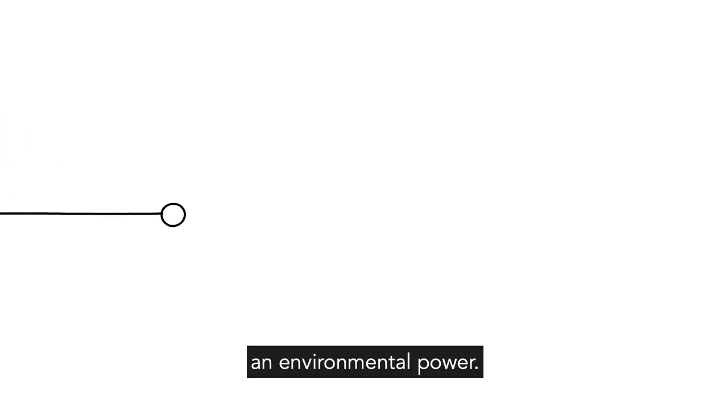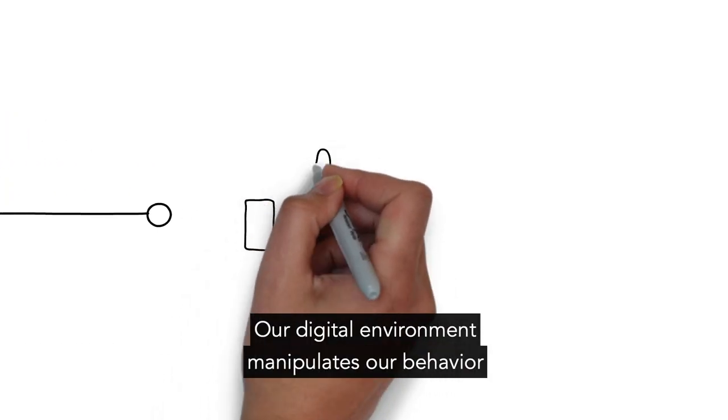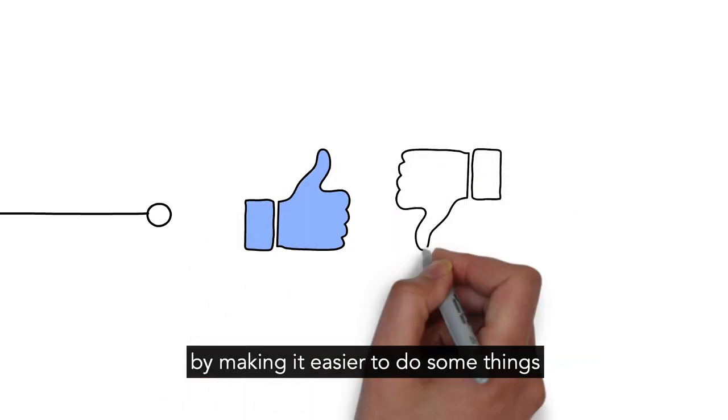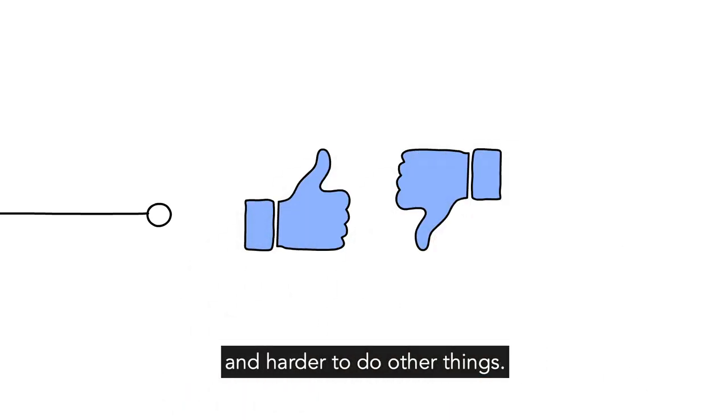Social media wields an environmental power. Our digital environment manipulates our behavior by making it easier to do some things and harder to do other things.